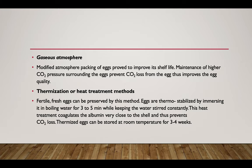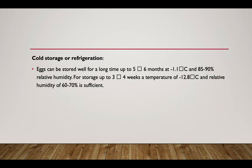Thermostabilized eggs can be stored at room temperature for about three to four weeks. For cold storage or refrigerated storage, eggs can be stored for a long period of about five to six months at minus 1.1 degrees centigrade with relative humidity of about 85 to 90 percent. For storage up to three to four weeks, a temperature of minus 12.8 degrees centigrade and relative humidity of 60 to 70 percent is sufficient.